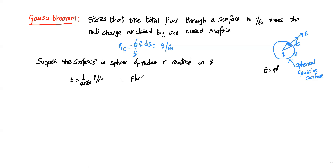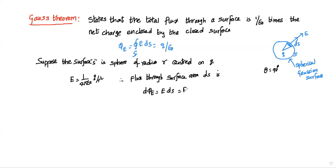Now we need to calculate the flux through the surface area. The flux through surface area ds is d phi E, which is equal to E dot ds. So E dot ds is nothing but E ds cos 0. The value of cos 0 is 1, so this comes as E ds.